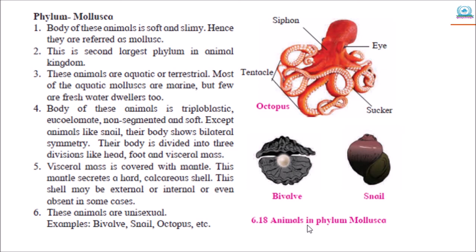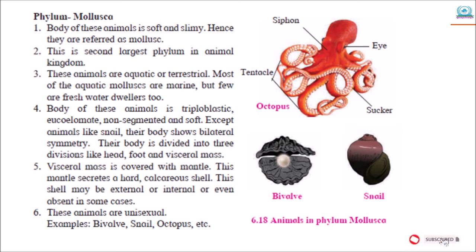The shell is external in snail and internal in octopus. These animals are unisexual. Examples: bivalve, snail, octopus, etc.